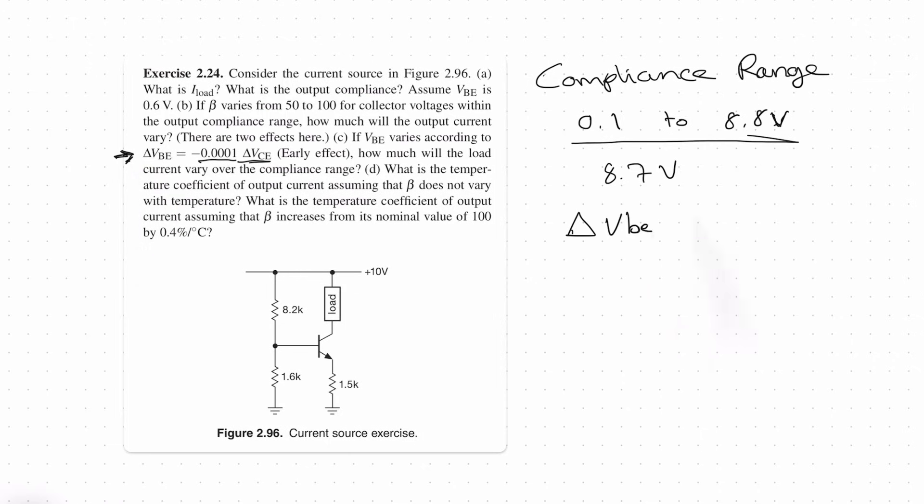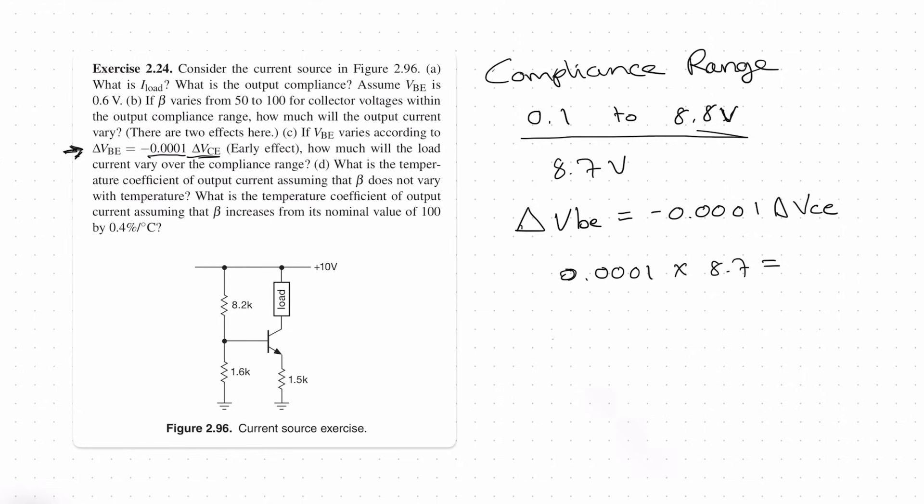So ΔVBE is equal to -0.0001ΔVCE. So we know our ΔVCE is 8.7. So we're going to times that by 0.0001. So this gives us a ΔVBE of 870 microvolts. So micro is times 10 to the minus 6. From there we know how much ΔVBE is going to change.